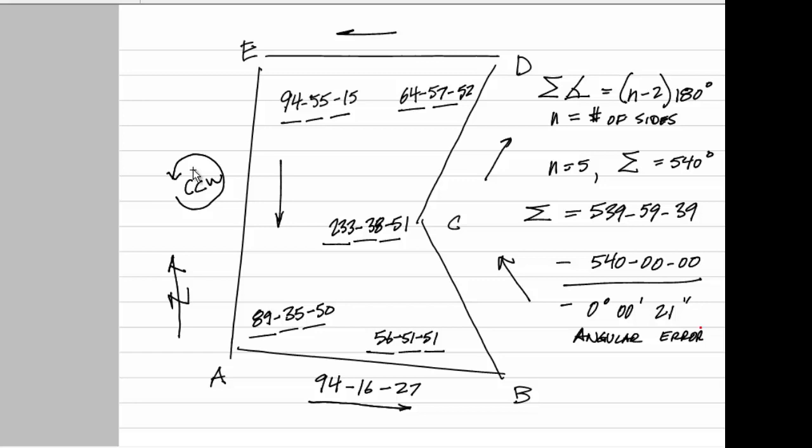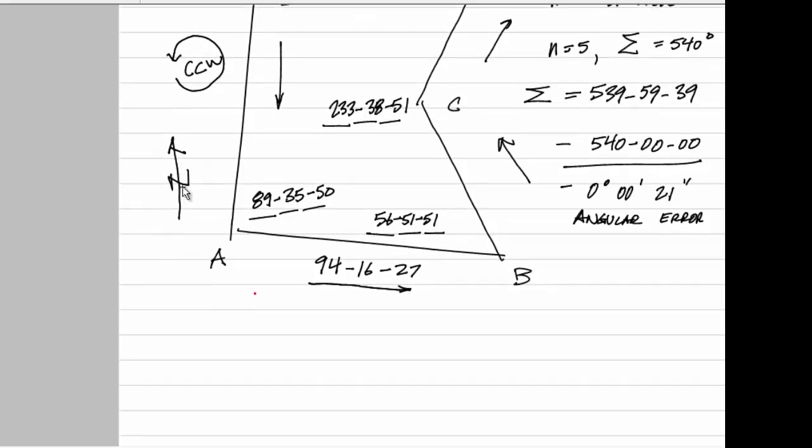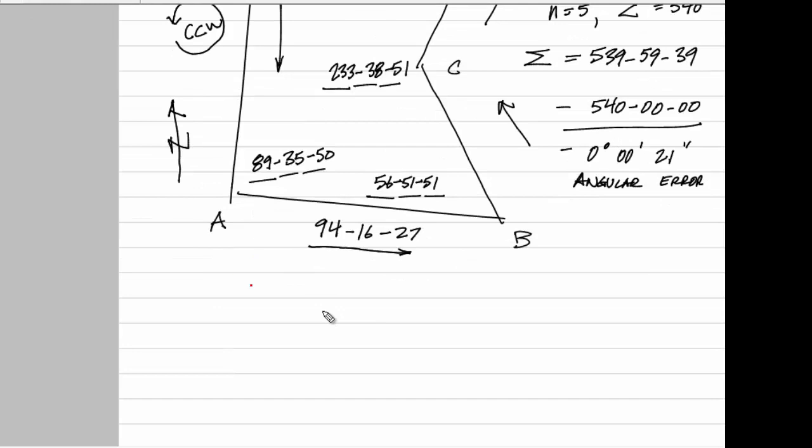We correct that. The simplest way to correct that, simplest accepted way, is to distribute that error evenly among all the angles. So I'm going to take my 21 seconds here and divide that by my five angles. So that gives me a correction of 4.2. Now consider, I almost forgot, if we have a negative 21 second error, I'm going to take the opposite in sign of that to get my correction. So here I would have a positive 4.2 second correction per angle.